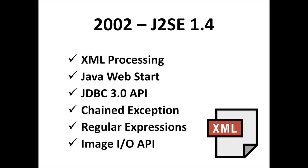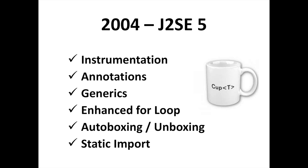Another big step forward for Java and the developers. Java 1.5, also known as Java 5 Tiger, was released in September 2004. Major changes include: generics to provide compile-time type safety for collections and eliminate the drudgery of casting, auto-boxing and unboxing, enhanced for loop with collections use, static imports, annotations which enable tools to generate code and deployment descriptors from annotations in the source code, and JVM improvements.